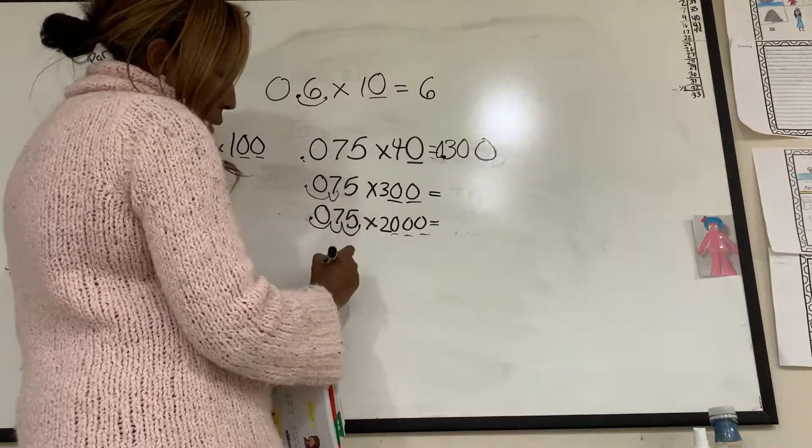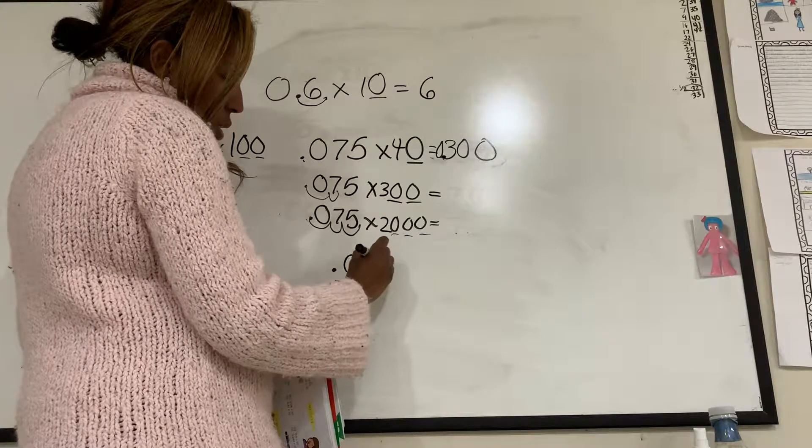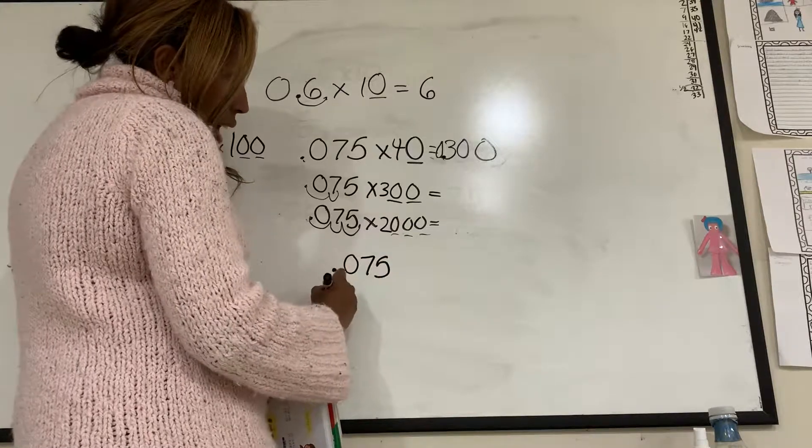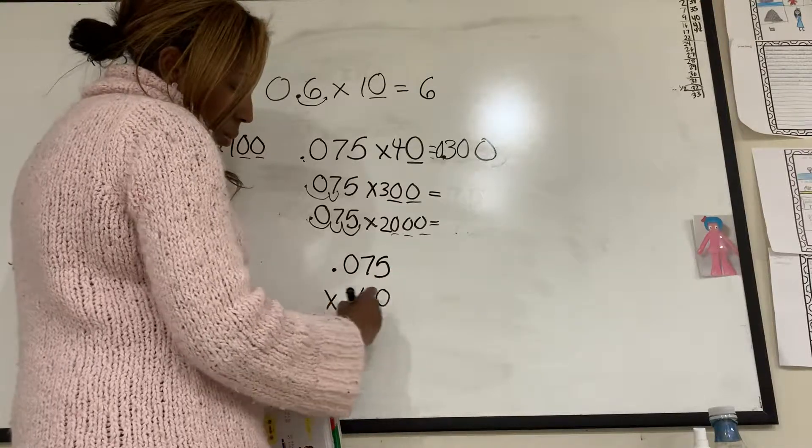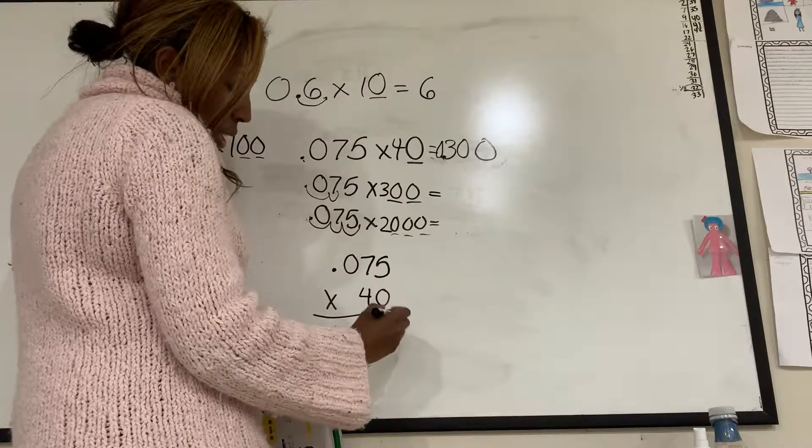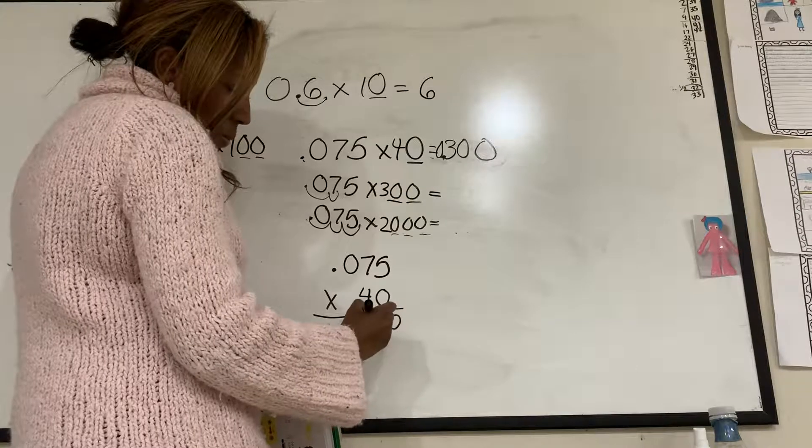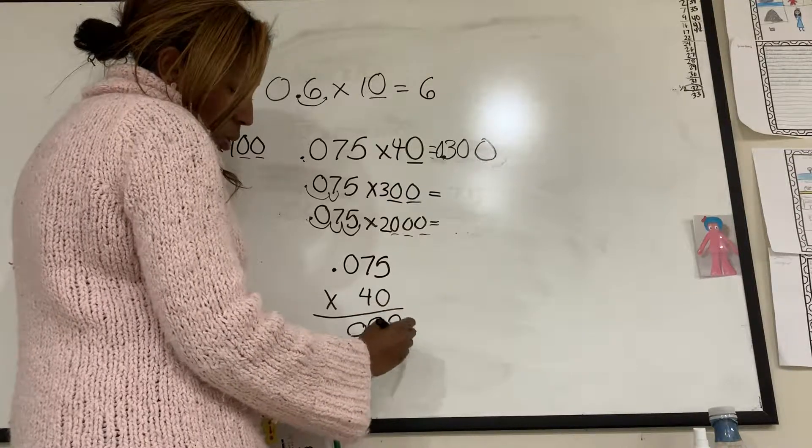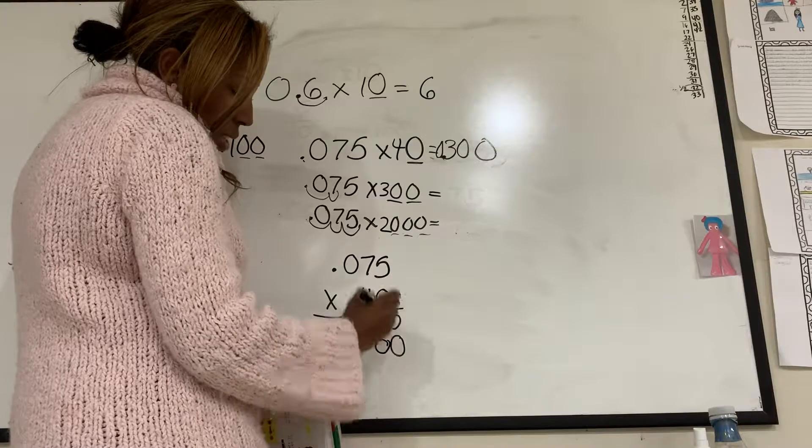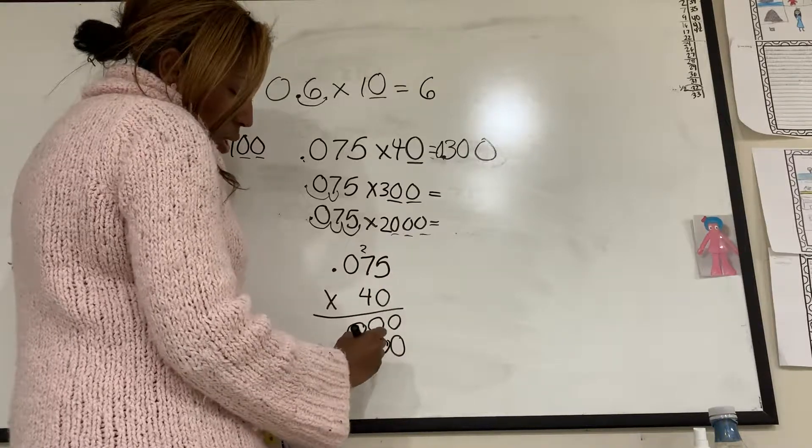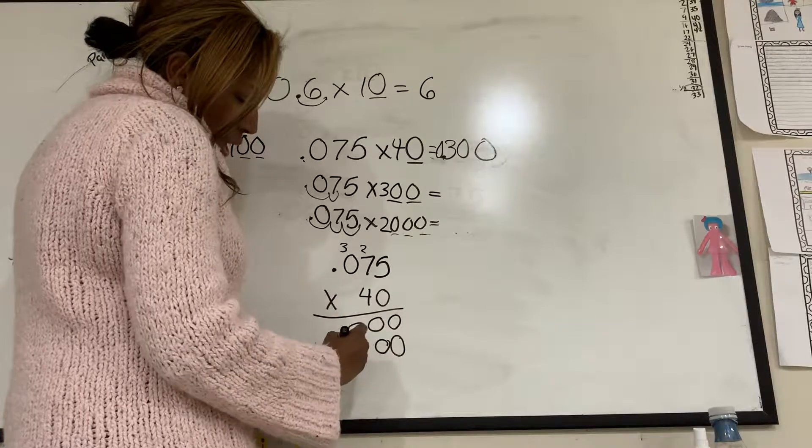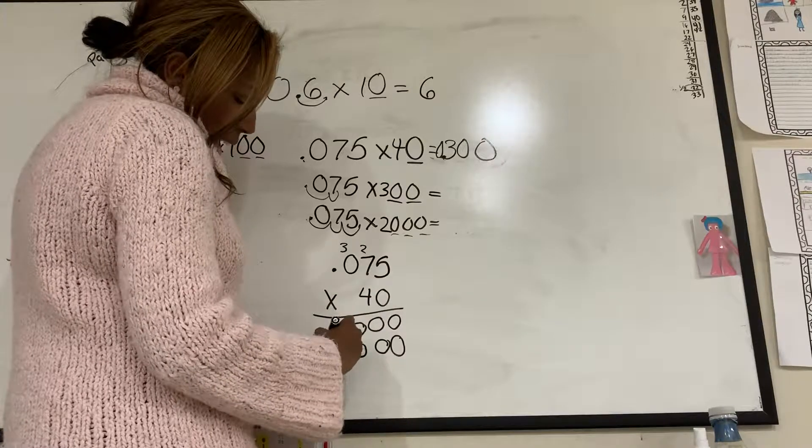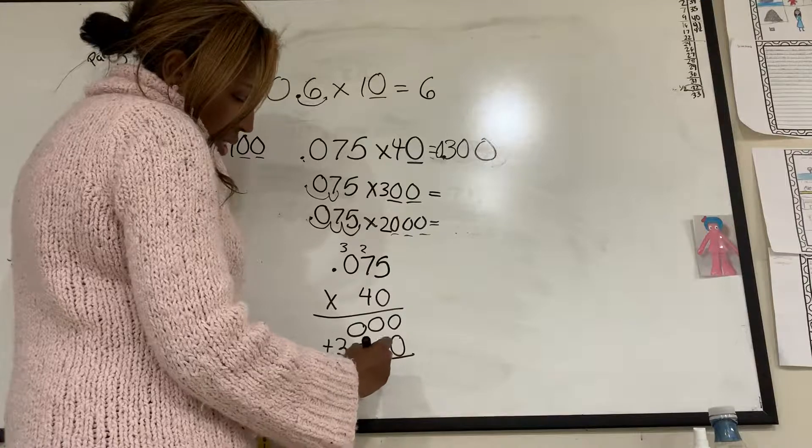Now let's double check. I had 0.075 times. Remember, I don't have to line anything up. 40. Well, I know the 0, 0, 0 is going to be 0 across. I hold the spot. 4 times 5 is 20. Put down the 0. Carried a 2. That's 30. Put down the 0. Carried a 3. And then 4 times 0 is 0. And then I bring the 3 down. Add it. I'm left with 3,000.